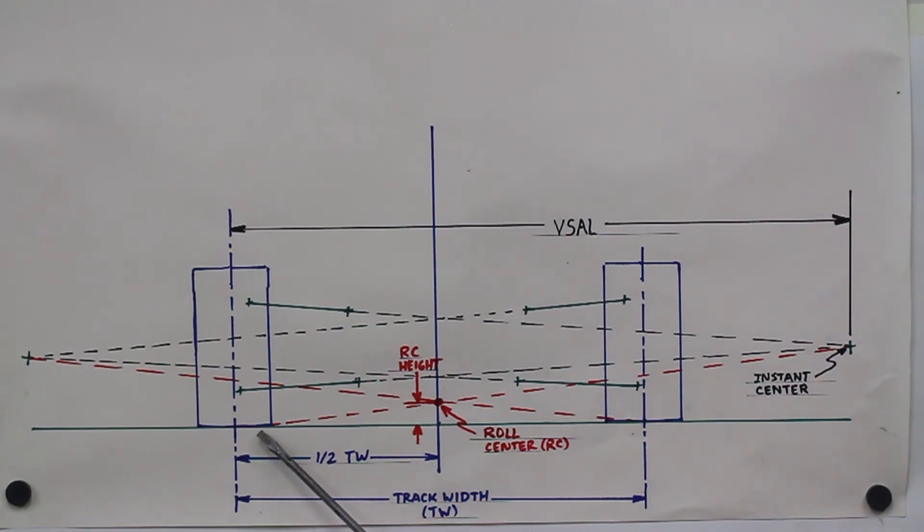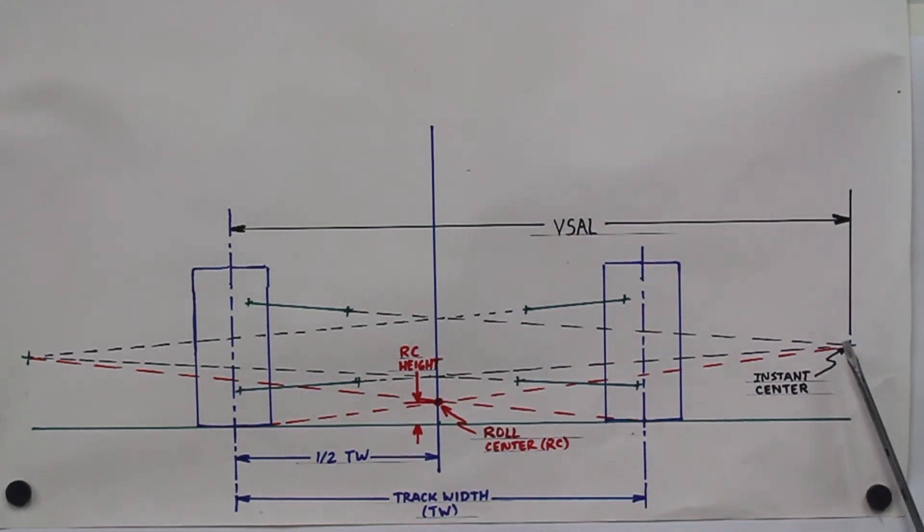The instant center is also where the actual force from the contact patch will act through. And so the roll center is defined as the intersection of the right and left lines through the instant centers and the contact patches. So obviously this is shown with the chassis not in a corner. If the chassis were in a corner, your instant centers will move around, this red line for each tire will move around, and the roll center could therefore move in or out, but it will always lie at the intersection of those two lines. What the roll center is, is that is the point about which the actual chassis will physically rotate.